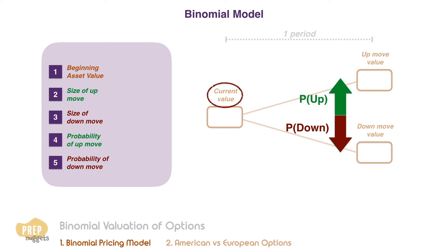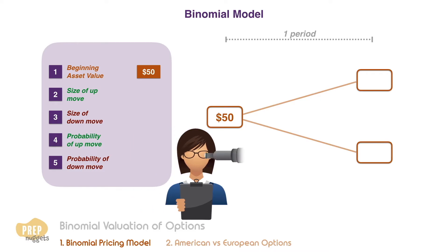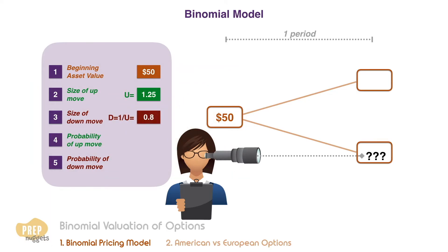To illustrate, consider a share of stock currently priced at $50. An analyst wants to estimate the expected price of the stock after one year. She estimates that the size of an up move is 25 percent. Denoting the up factor as U, U is therefore 1.25. The down factor D has to be the reciprocal of U, so in this case D is 0.8.